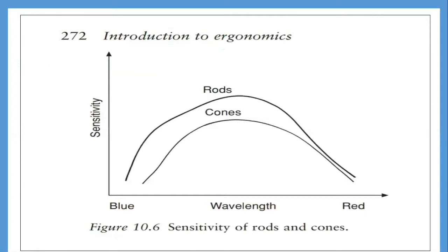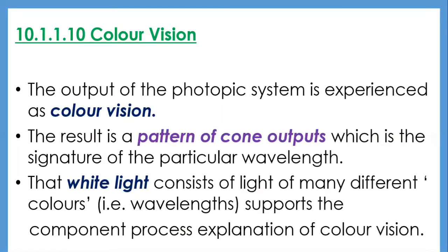Figure 10.6 shows the sensitivity of rods and cones to light of different wavelengths, depicting the sensitivity of the photopic and scotopic systems. Both systems are maximally sensitive to light in the middle of the spectrum, perceived as blue-green, green, and yellow. Violet and red are less readily sensed, meaning a red object requires more illumination to appear as subjectively bright as a green one. It is unfortunate that red is normally used to signal danger, since the retina is less sensitive to red than other colors at the same illumination level.